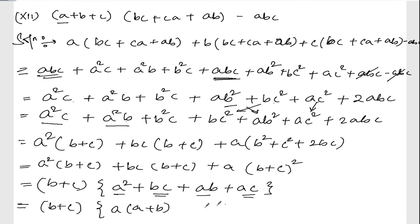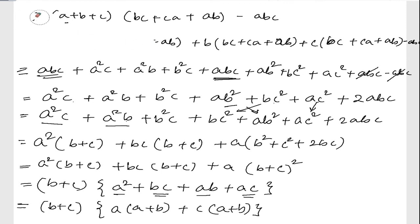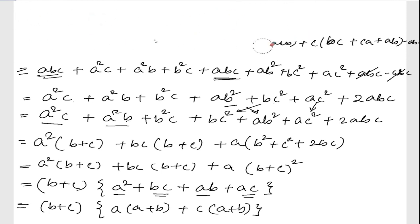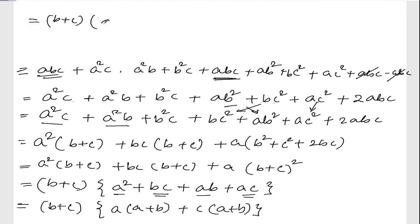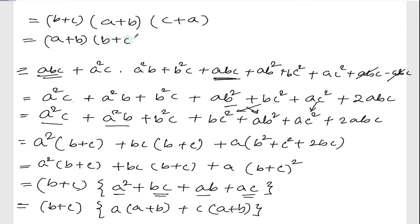From a² + ab and ac + bc, taking a common gives a(a + b), and taking c common gives c(a + b). So we take (a + b) common, leaving (a + c). The final answer is (a + b)(b + c)(c + a) in cyclical order. That's all, thank you so much — we'll meet in the next video.